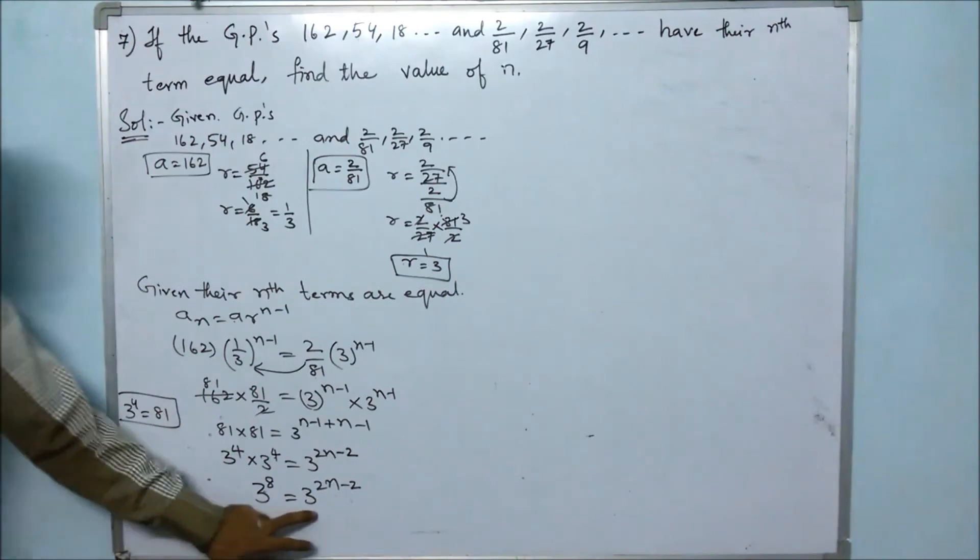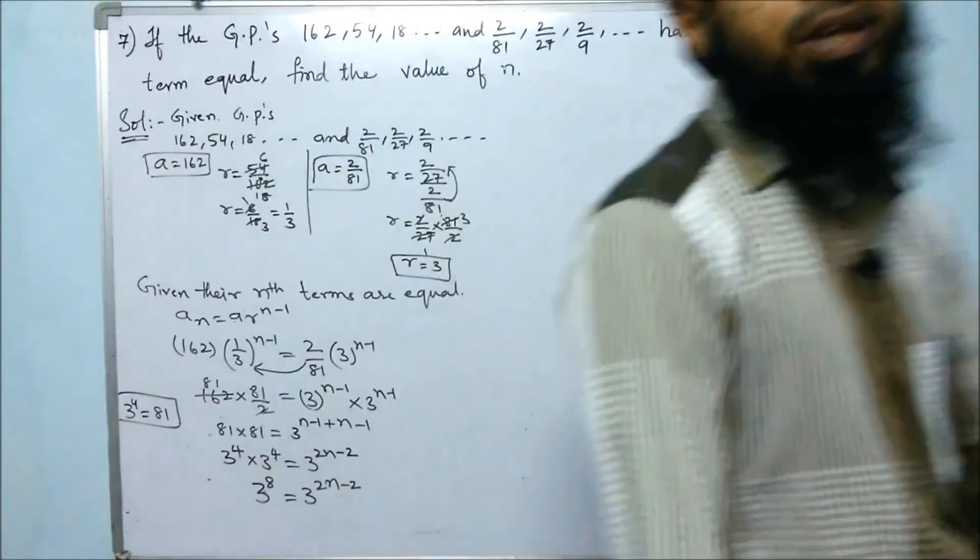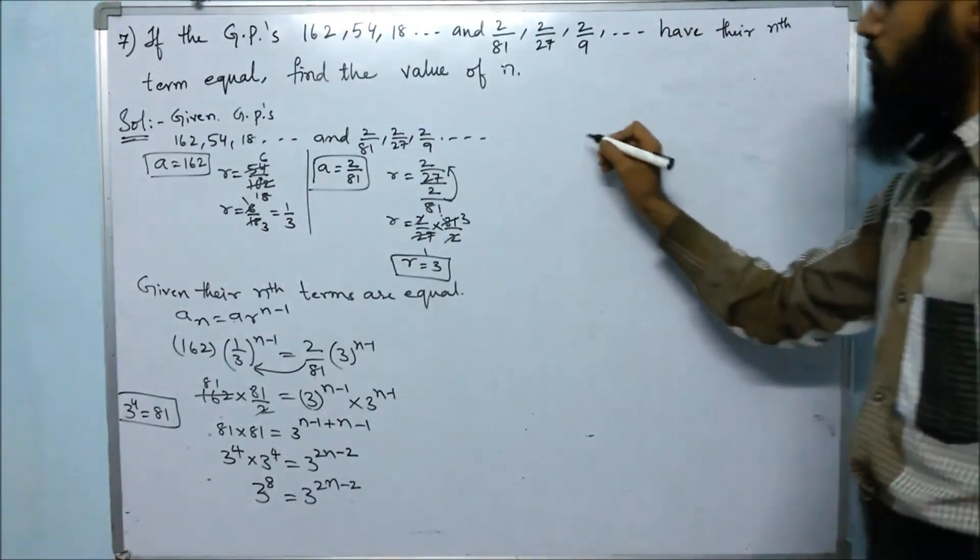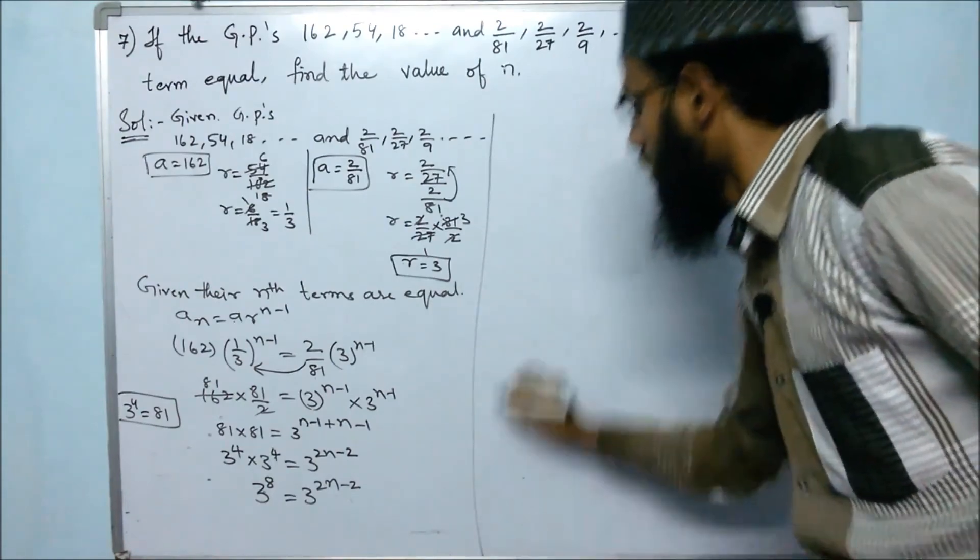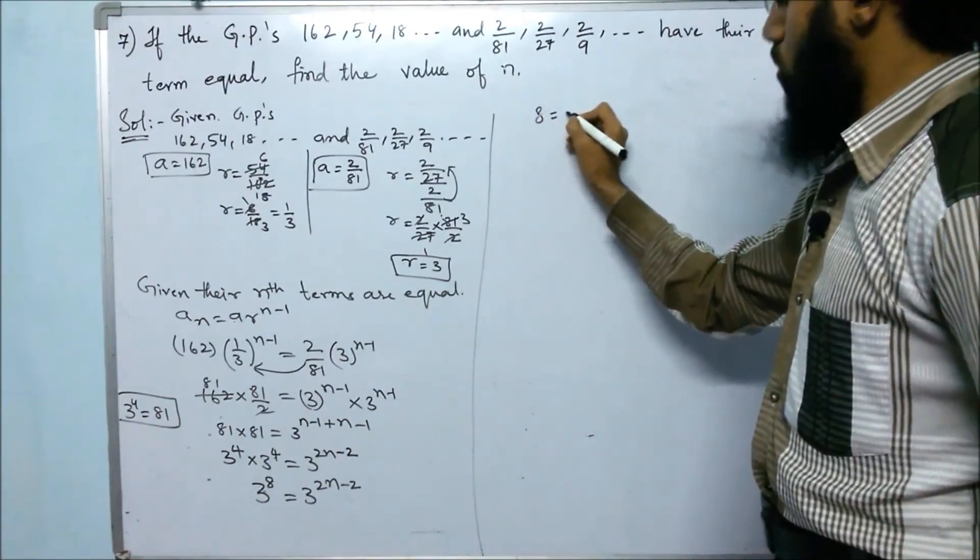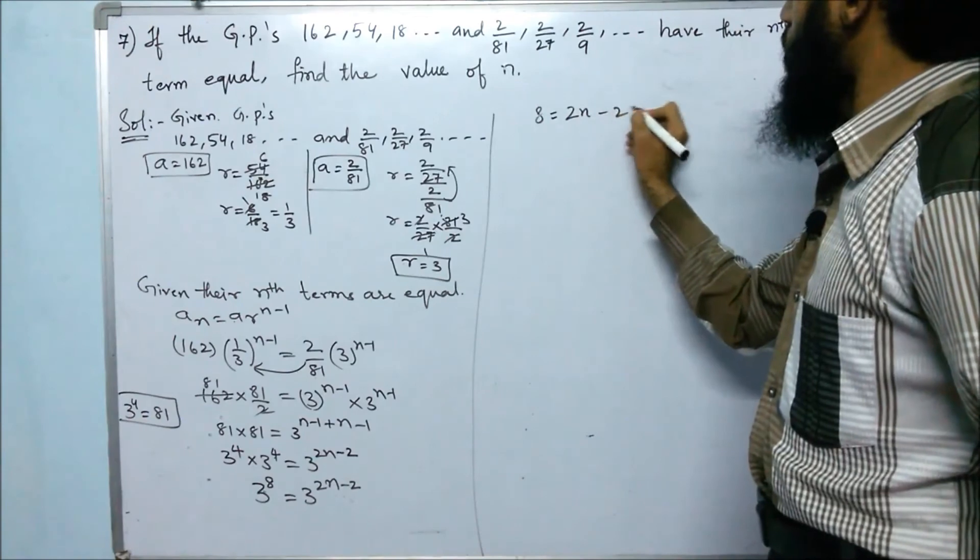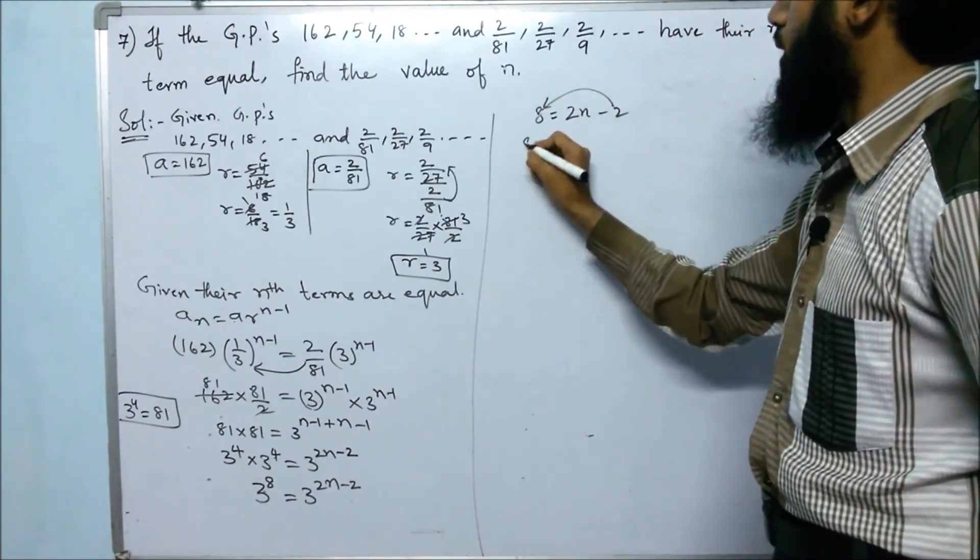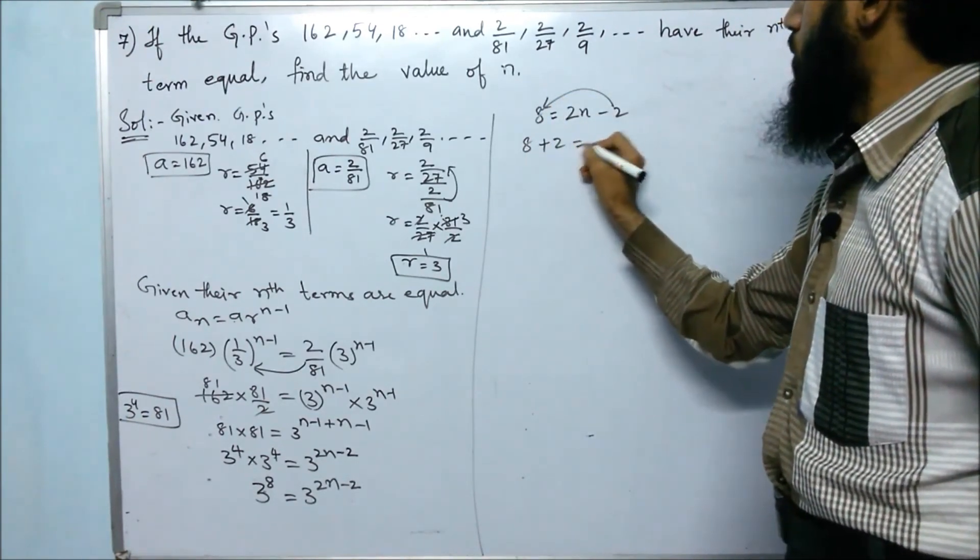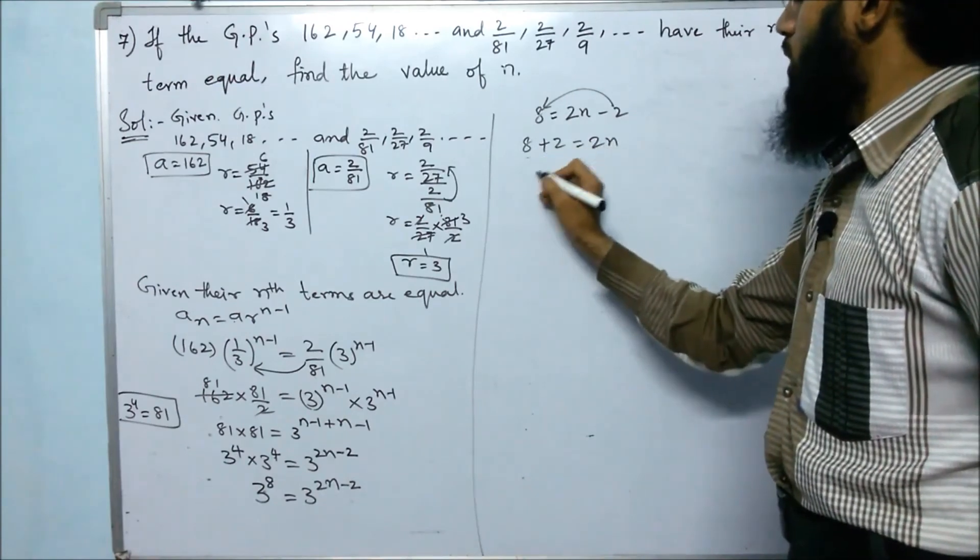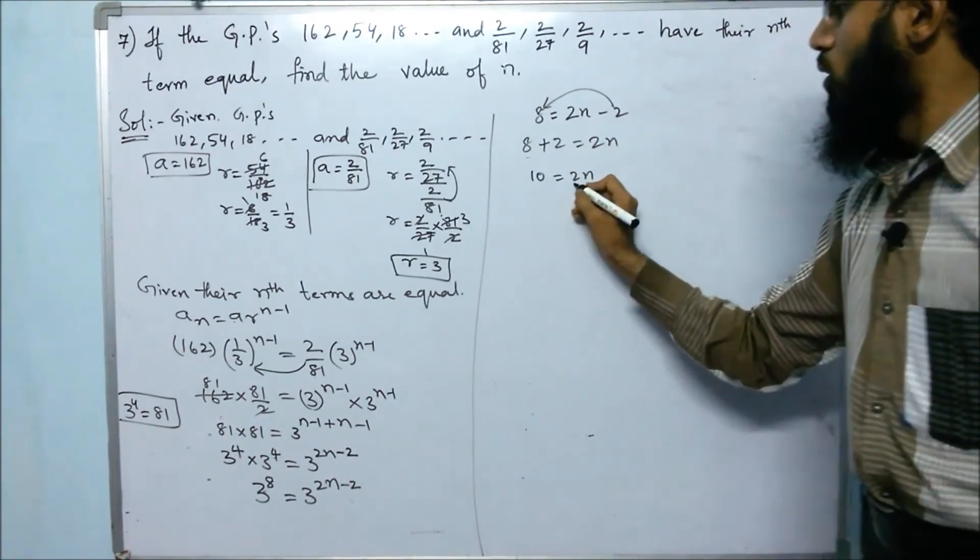8 equals 2n minus 2. Moving minus 2 to the other side: 8 plus 2 equals 2n. So 10 equals 2n.